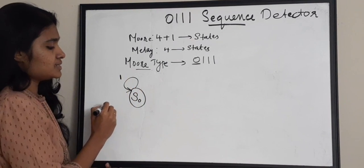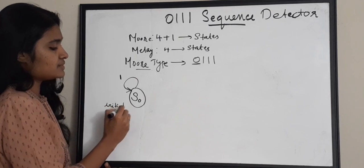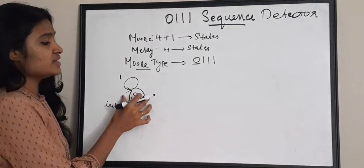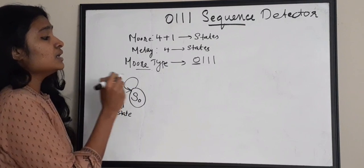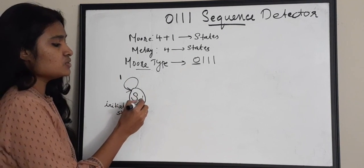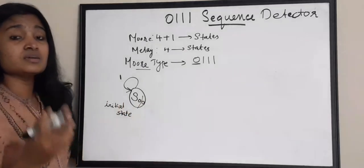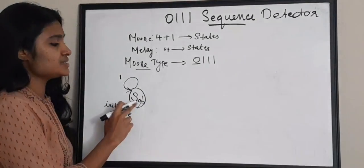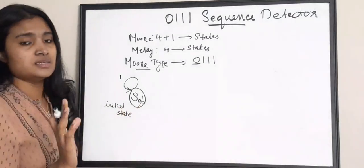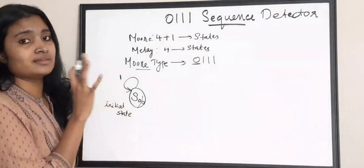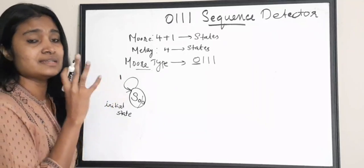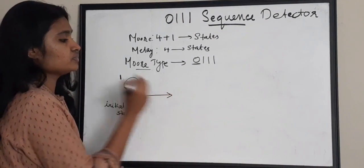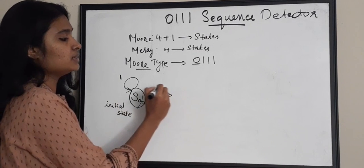If you are receiving a 1, you are at your initial state itself. In this state your output is also 0. If it is a Moore type of FSM then each state has an output, so S0 state is associated with an output of 0. If you are receiving a 1 at this state you stay at the initial state, but if you receive a 0 you can move further.